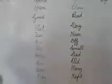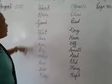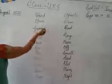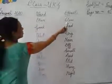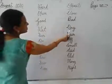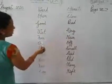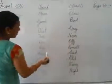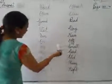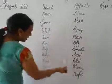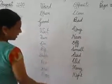Okay children. Repeat again. We will repeat once again. Say with me: Open. Close. Good. Bad. Dry. Far. Near. On. Off. Big. Small. Happy. Sad. New. Old. Few. Many. Day. Night.